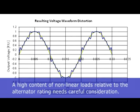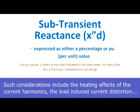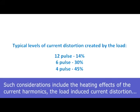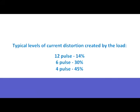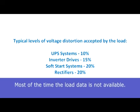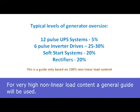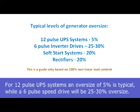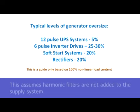A high content of non-linear load relative to alternator rating needs careful consideration. Such considerations include the heating effects of the current harmonics, the load-induced current distortion, resulting voltage distortion, and the size and sub-transient reactance value of the chosen alternator. Most of the time, the load data is not available. For very high content non-linear loads, a general guide will be used: for 12-pulse UPS systems, an oversize of 5% is typical, while a 6-pulse variable speed drive will be 25% to 30% oversize. This assumes harmonic filters are not added to the supply system.